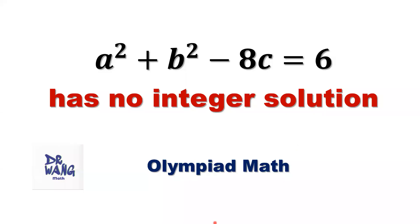Hello everyone, I'm Dr. Wen. Here is the question: a squared plus b squared minus 8c equals 6 has no integer solution. How to prove this?